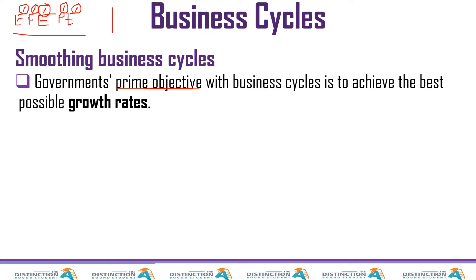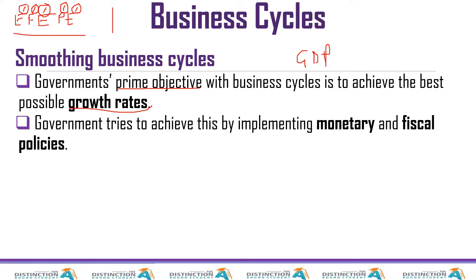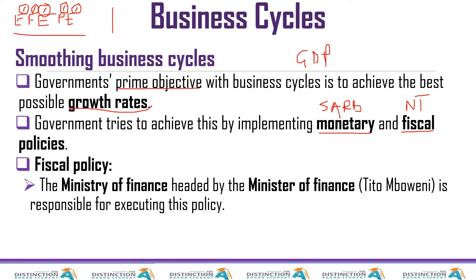Government's prime objective with business cycles is to achieve the best possible growth rate — that is an increase in gross domestic product. Government tries to achieve this by implementing two policies: first, the monetary policy, which is the responsibility of the South African Reserve Bank; and second, the fiscal policy, which is the responsibility of the National Treasury or the Ministry of Finance.